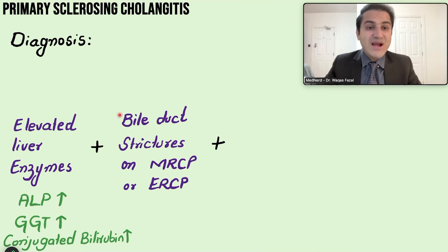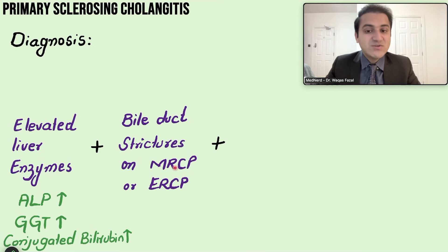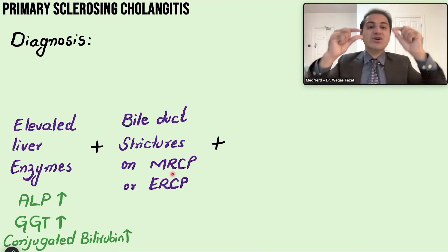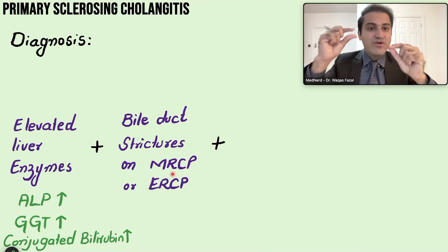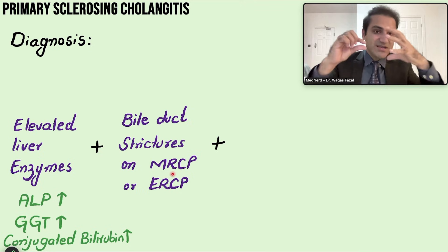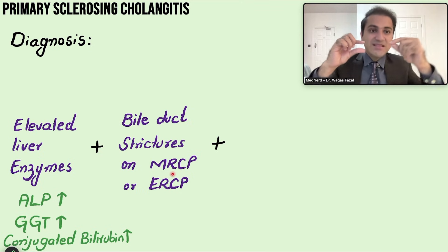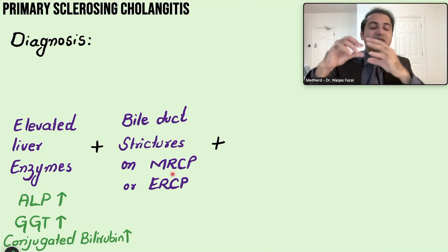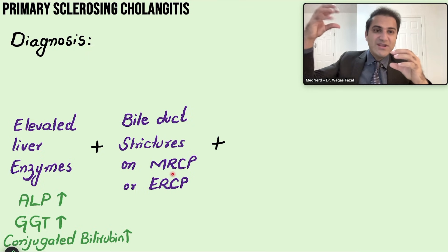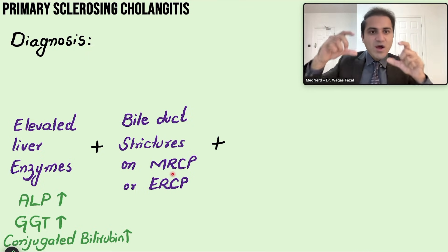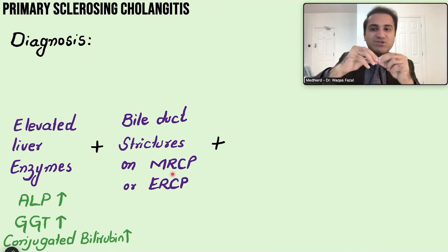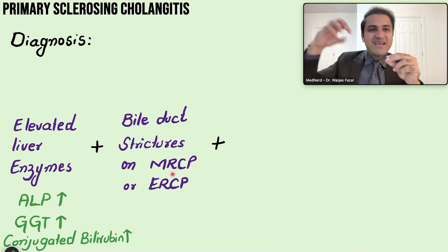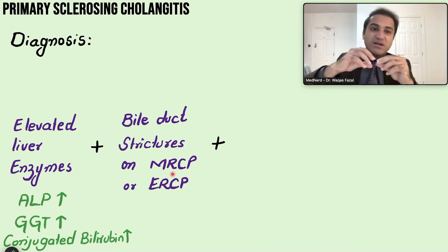Bile duct strictures are seen on MRCP or ERCP. MRCP stands for magnetic resonance cholangiopancreatography. In this procedure, a scope is advanced to the ampulla of Vater — where the bile duct opens into the intestine — a dye is injected, and pictures of its travel through the ducts are taken.